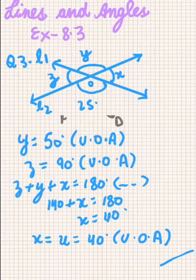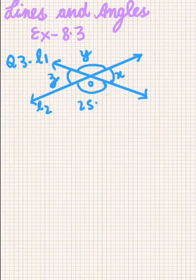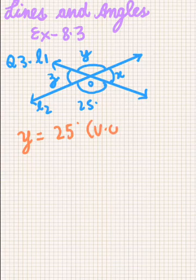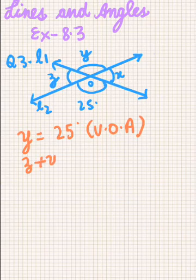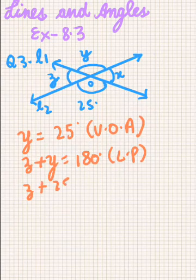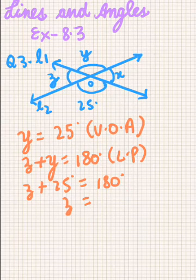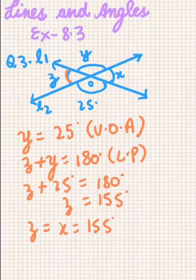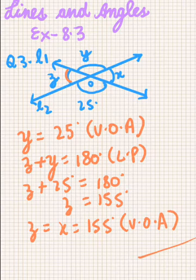Let's proceed to Question 3, in which we have to find x, y, and z. This question is simple: y equals 25 degrees because of vertically opposite angles. On line L2, z plus y form a linear pair, so z plus 25 equals 180 degrees, giving z equal to 155 degrees. Since z and x are vertically opposite angles, x also equals 155 degrees, and we have all the values.